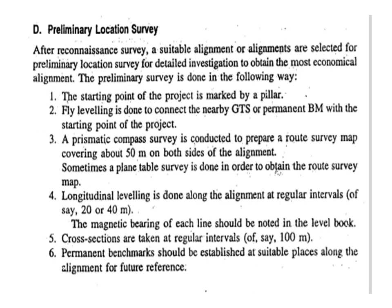After reconnaissance survey, a suitable alignment is selected for preliminary location survey for detailed investigation to obtain the most economical alignment. The preliminary survey is done as follows: the starting point of the project is marked by a pillar; fly leveling is done to connect the nearby GTS (Great Trigonometrical Survey) Benchmark or Permanent Benchmark with the starting point; a prismatic compass survey is conducted to prepare a route survey map covering about 50 meters on both sides of the alignment; sometimes a plane table survey is done; longitudinal leveling is done along the alignment at regular intervals of say 20 or 40 meters; the magnetic bearing of each line should be noted; cross sections are taken at regular intervals of say 100 meters; and permanent benchmarks are established at suitable places along the alignment for future reference.